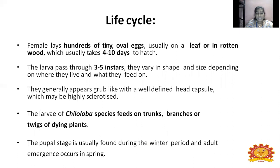The larva of the Chiloba species feeds on trunk, branches, or twigs of dry implants during larval stage. The adult feeds only on flowers or blossoms of the maize crop. The pupal stage is usually found in the winter period, and adult emergence occurs in spring season.